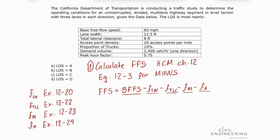So let's do the math. Our free flow speed equals 60 minus our adjustment factor for lane width. From the data we have a lane width of 11.5 feet, and looking at exhibit 12-20 that gives us 1.9. Minus our adjustment factor for total lateral clearance — we have a total lateral clearance of 8 feet, and from exhibit 12-22 that is 0.9.